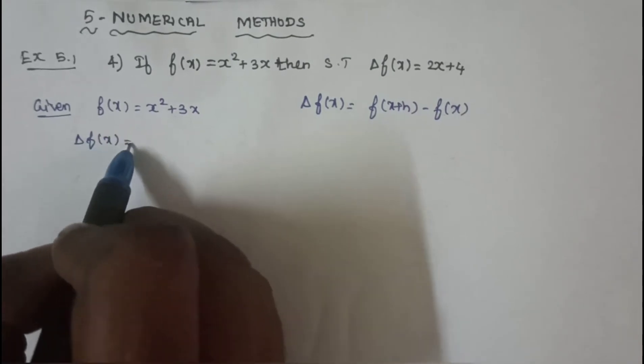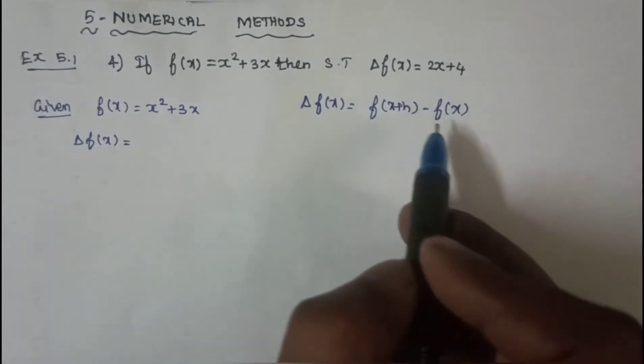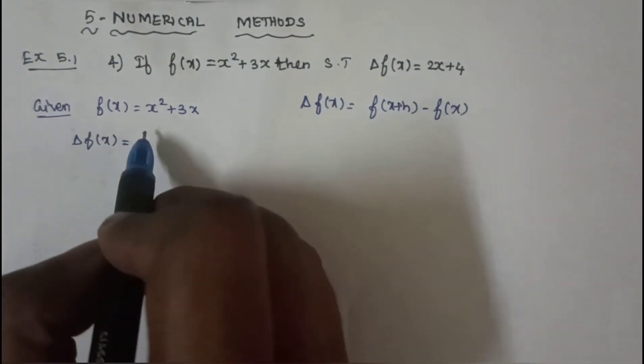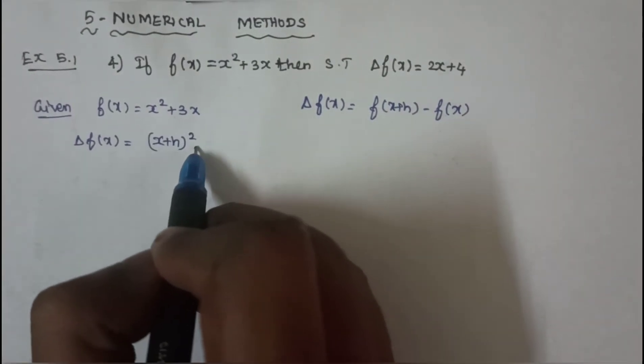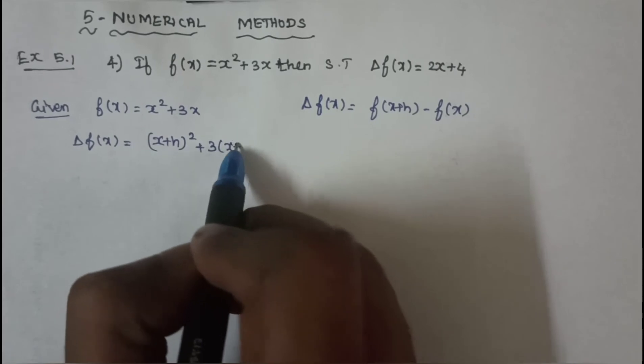Delta f(x) equal to x plus h term minus f(x) term. X plus h whole square plus 3 into x plus h.